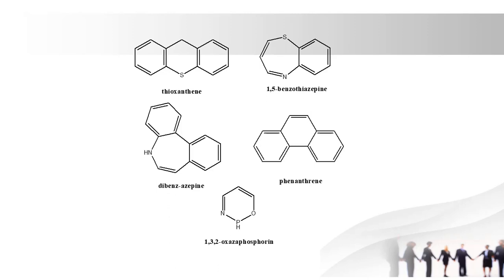Next one is dibenzoazepine. 'Dibenzo' means 2 benzene rings, and 'azepine' denotes a 7-membered ring containing nitrogen. The drug carbamazepine contains the dibenzoazepine ring.